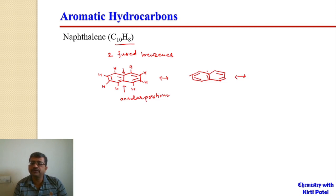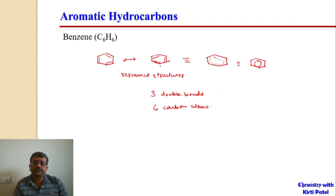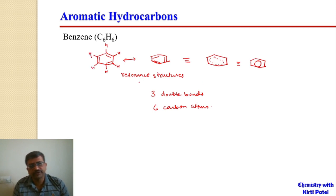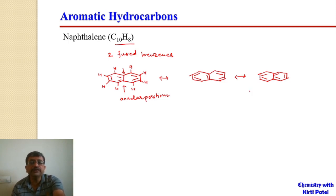We can draw another resonance structure for naphthalene because the two carbon atoms are common for both rings. Naphthalene has three resonance structures, whereas benzene has two. The more resonance structures a compound has, the greater its stability. Benzene's formula is C6H6. Naphthalene's three resonance structures give it greater stability than benzene.